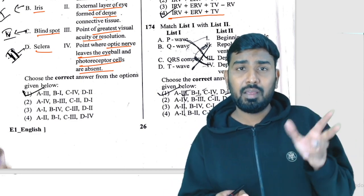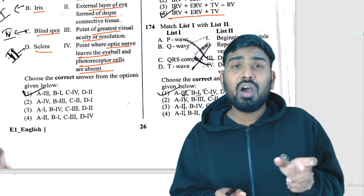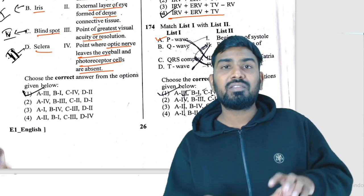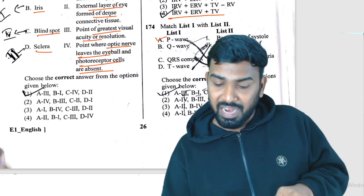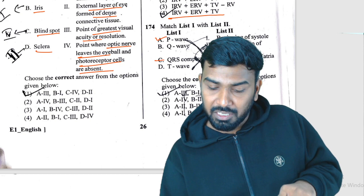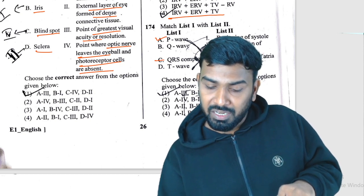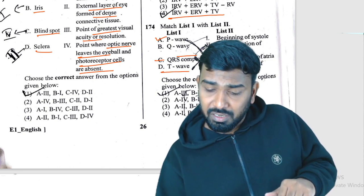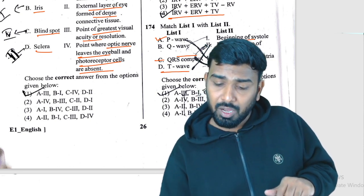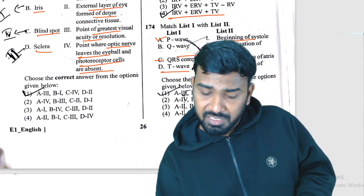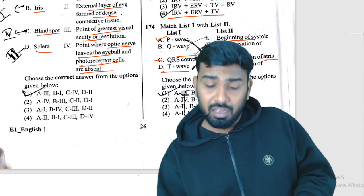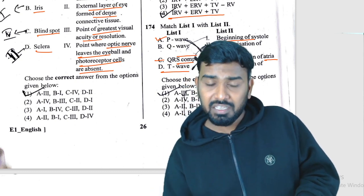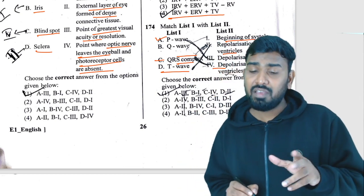Question 174 is a repeated question about the ECG. P wave represents depolarization of atria. QRS complex represents depolarization of ventricles. T wave represents repolarization of ventricles. Match these accordingly — Q174 is solved by direct matching.